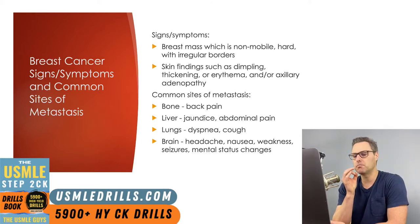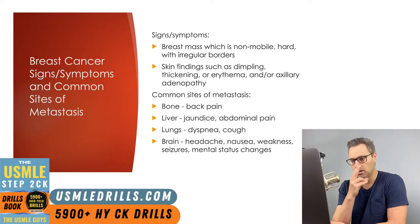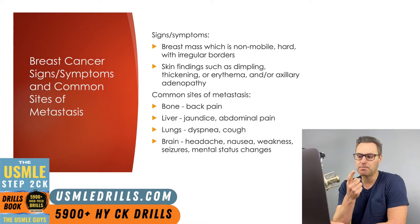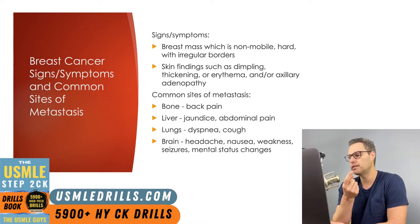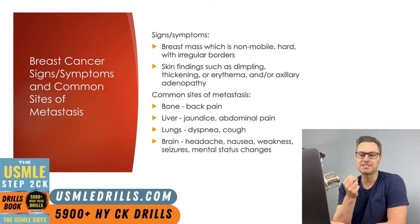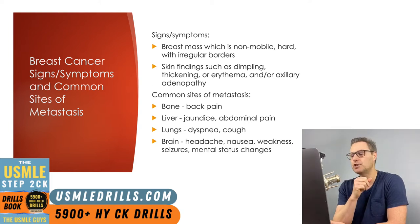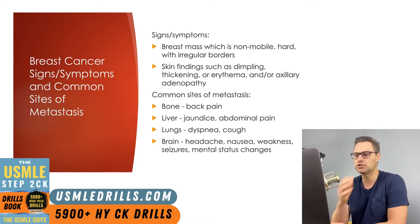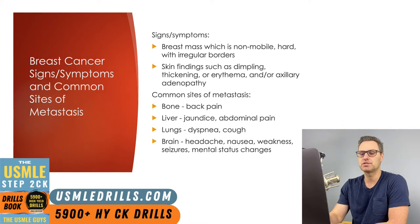The most common sites for metastatic disease of the breast include the bone, liver, brain, and lungs. Symptoms may manifest as back pain or leg pain with bony metastasis, jaundice or abdominal pain with liver metastasis, and cough or dyspnea with metastasis to the lungs. Depending on the size and location of brain metastasis, patients can present with headache, nausea, weakness, seizures, or even mental status changes.